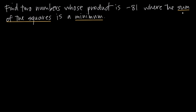So what do we mean when we say sum of the squares? If we call our two numbers x and y, their squares are going to be x squared and y squared, so the sum of their squares would be x squared plus y squared. We need to generate a function for whatever we're trying to maximize or minimize, so let's call the sum of the squares s. We have s equals x squared plus y squared, and we want to minimize s.